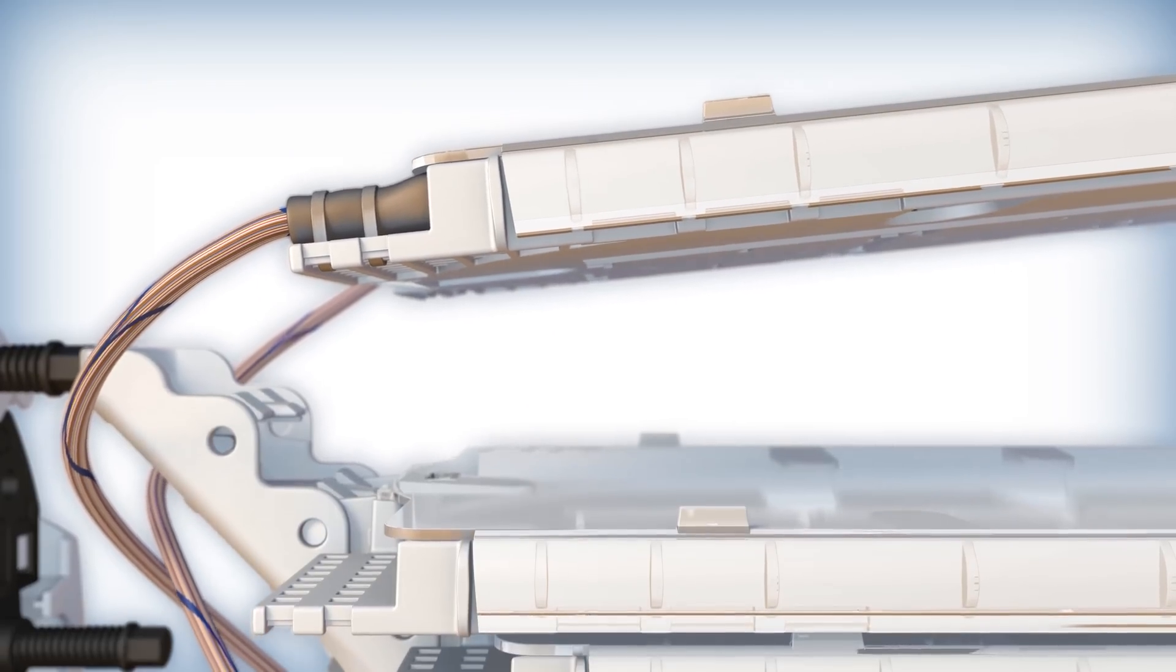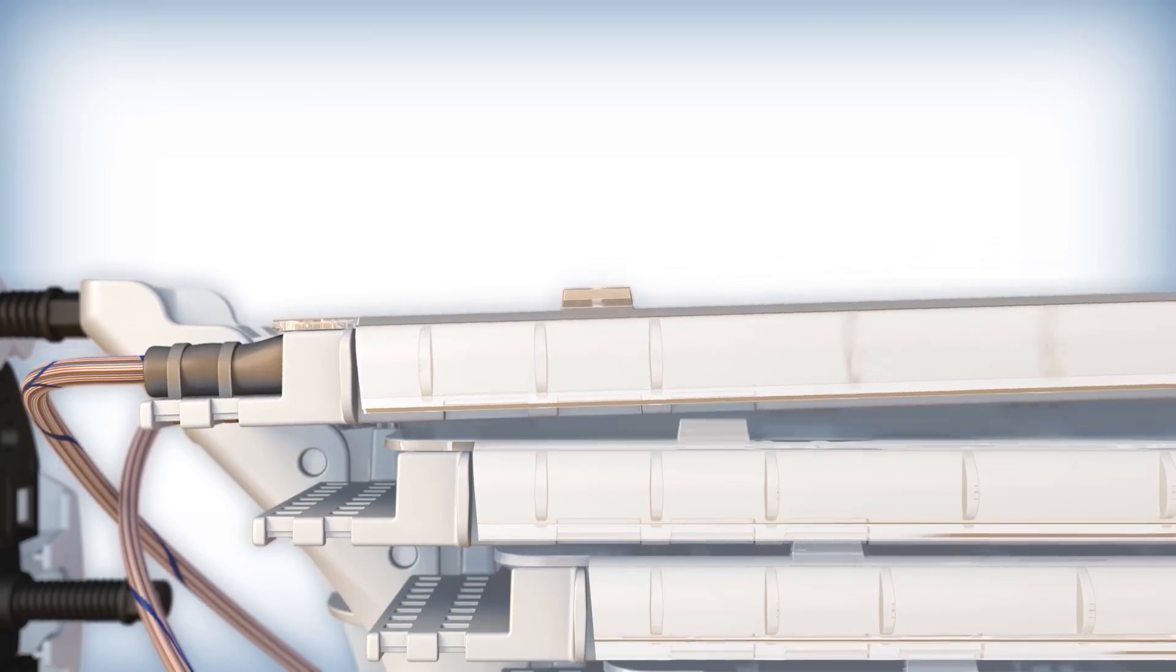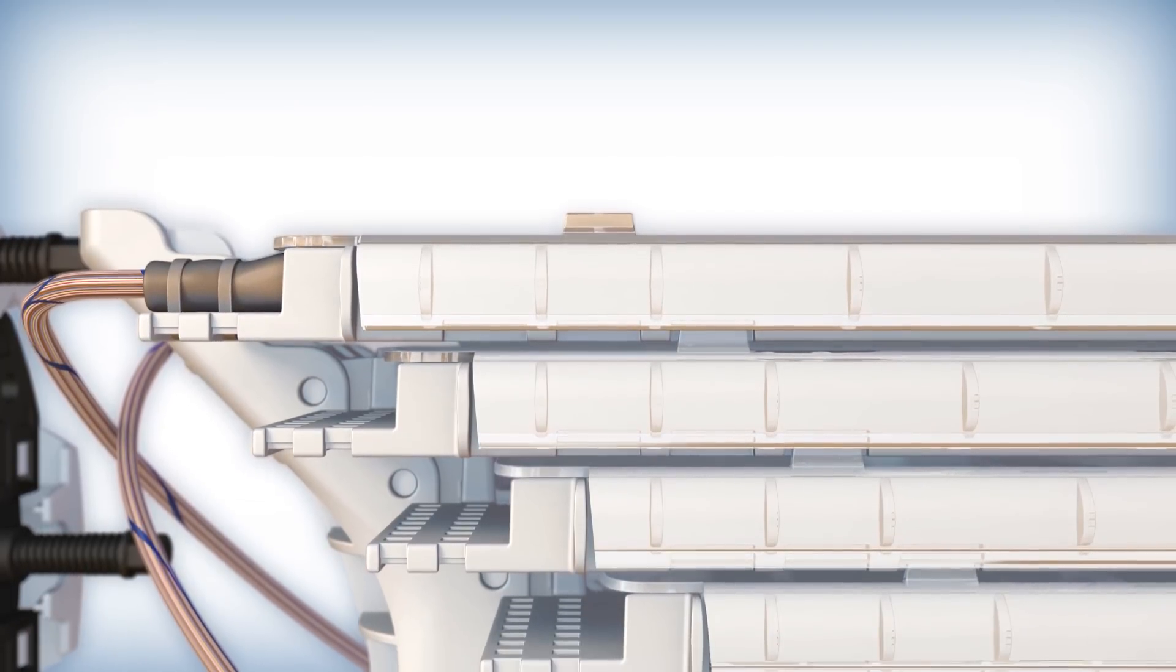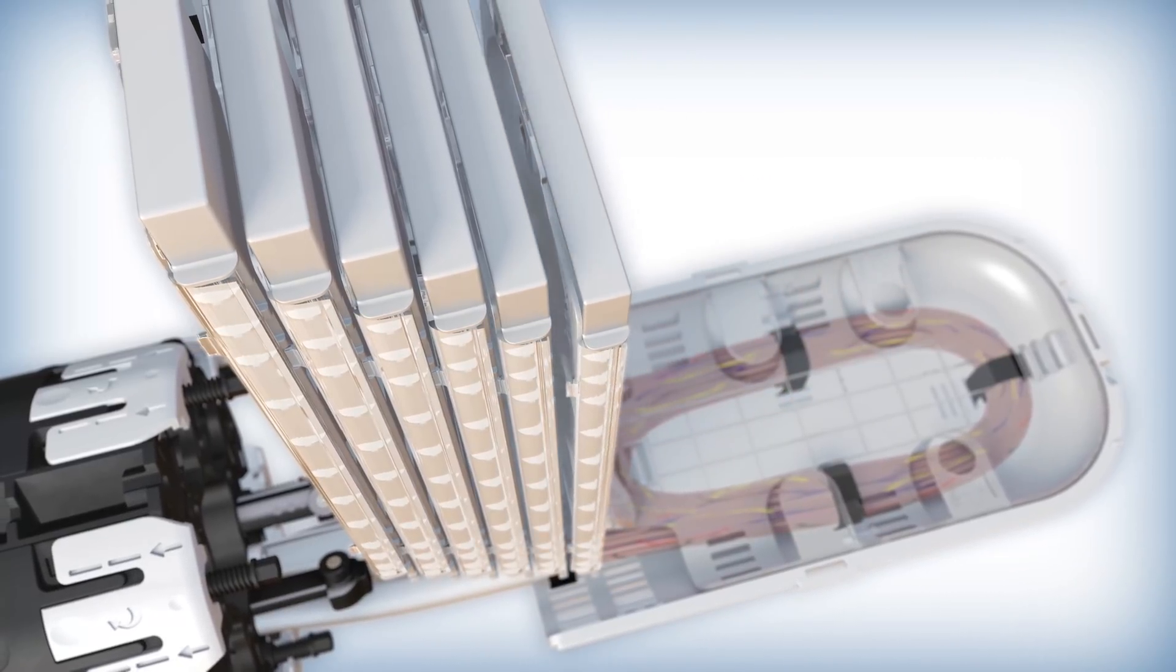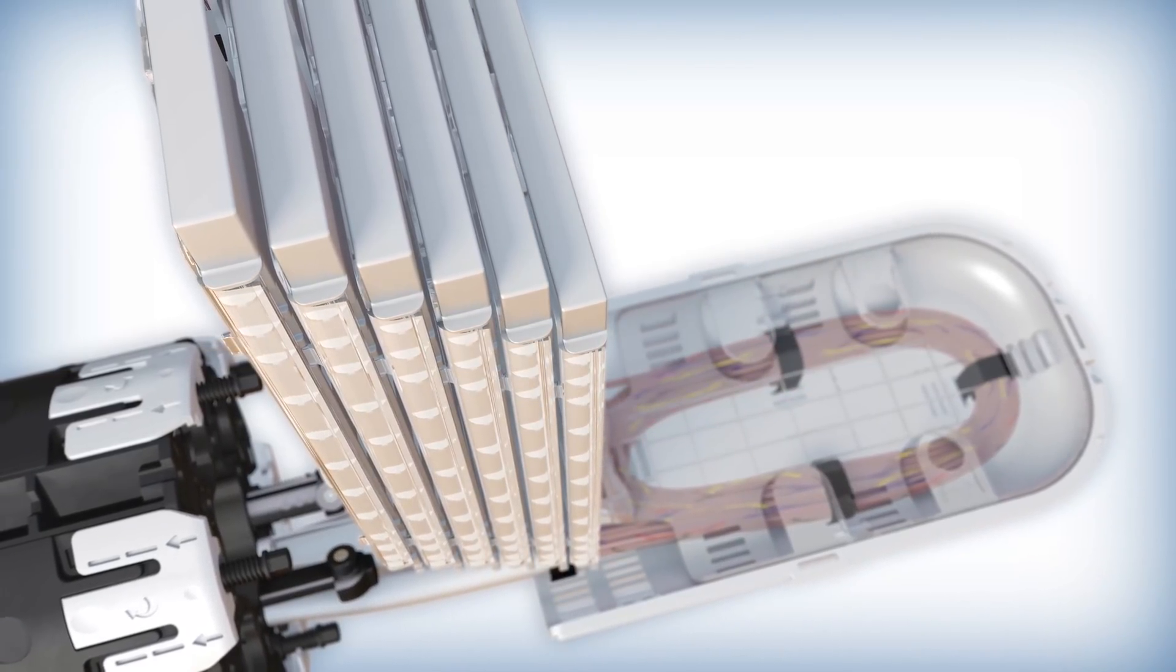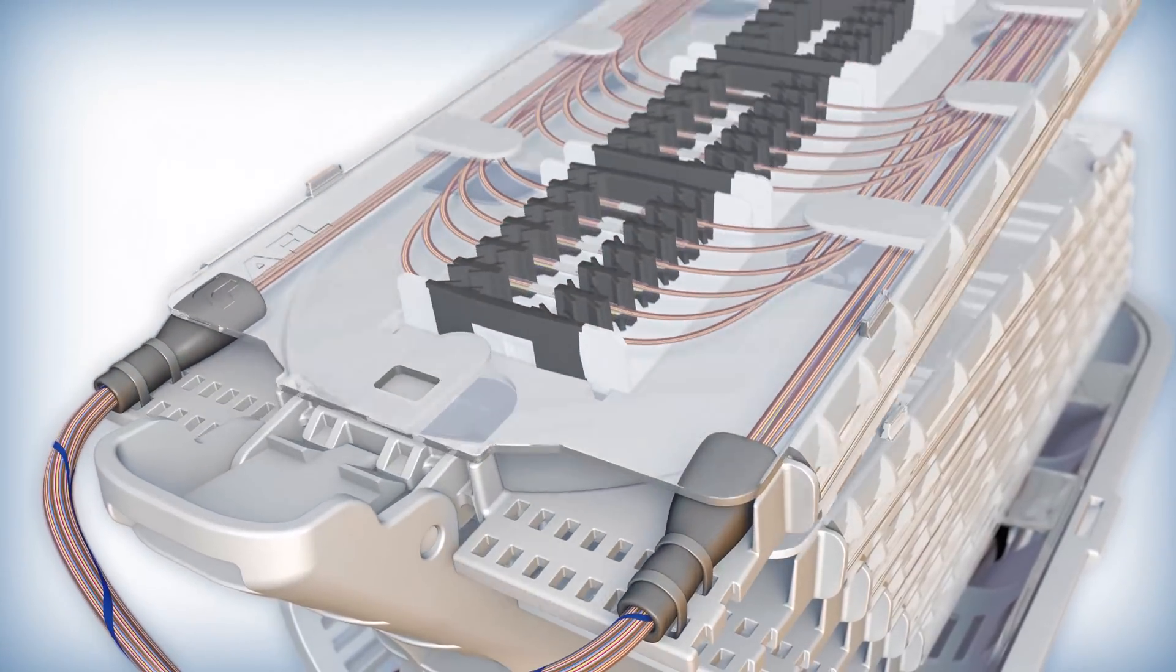Once the tray modules are loaded, the trays are snapped into the splice tray bracket to create an orderly stack. Each tray can hinge into an upright locked position to provide access to the slack basket and unlock by depressing its lock tab.